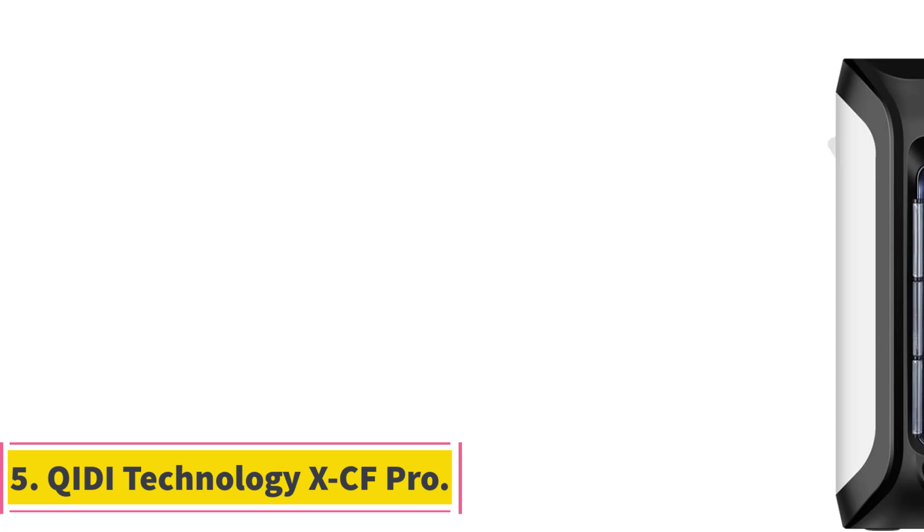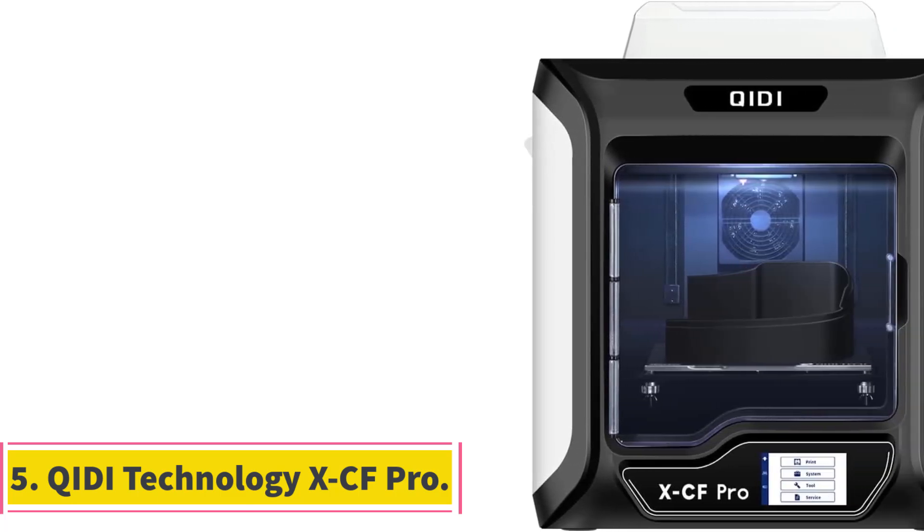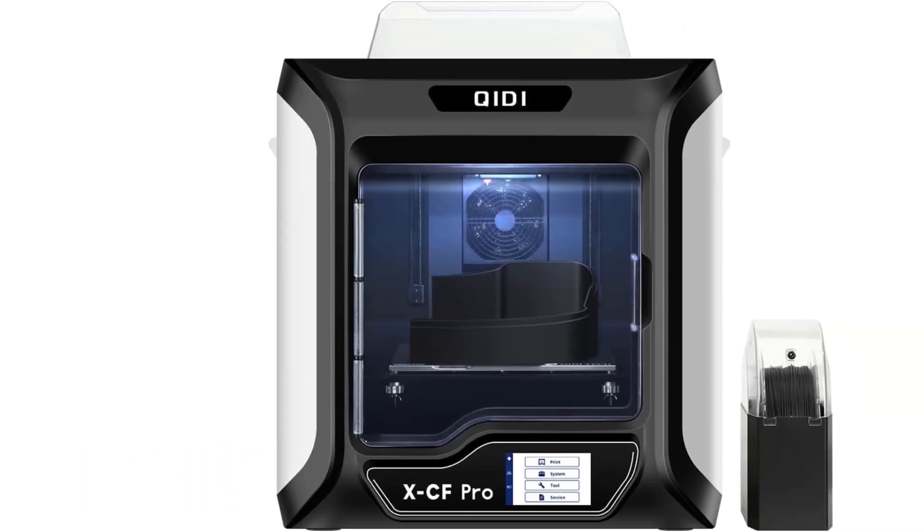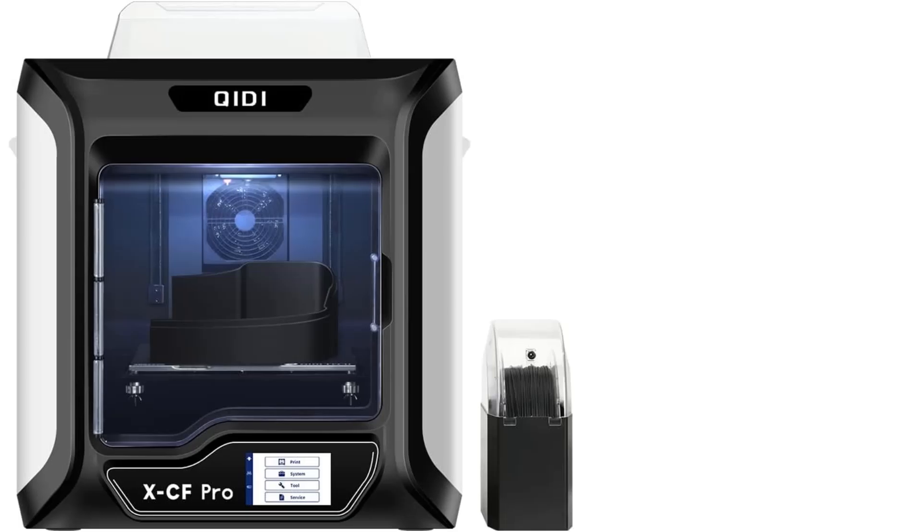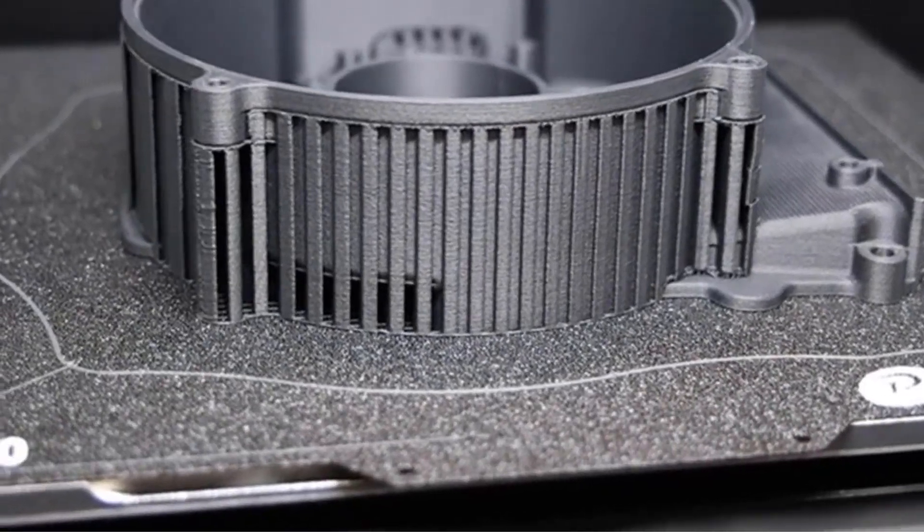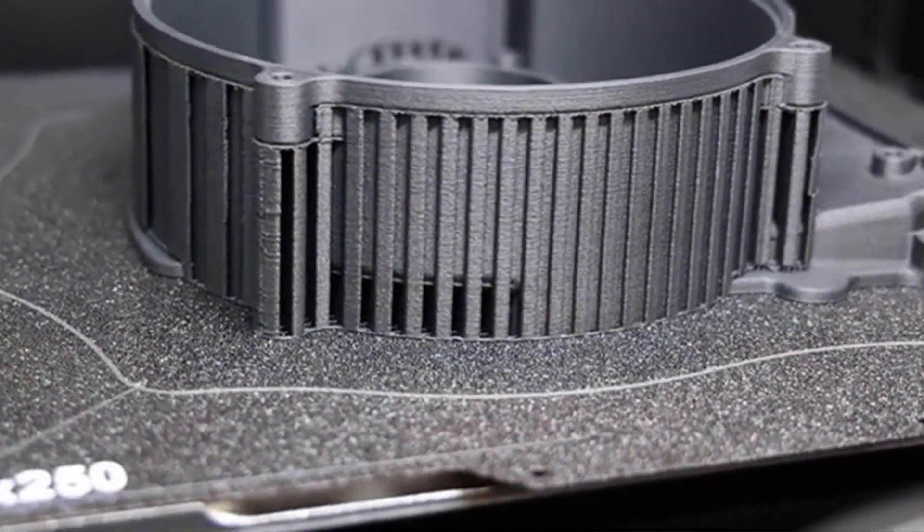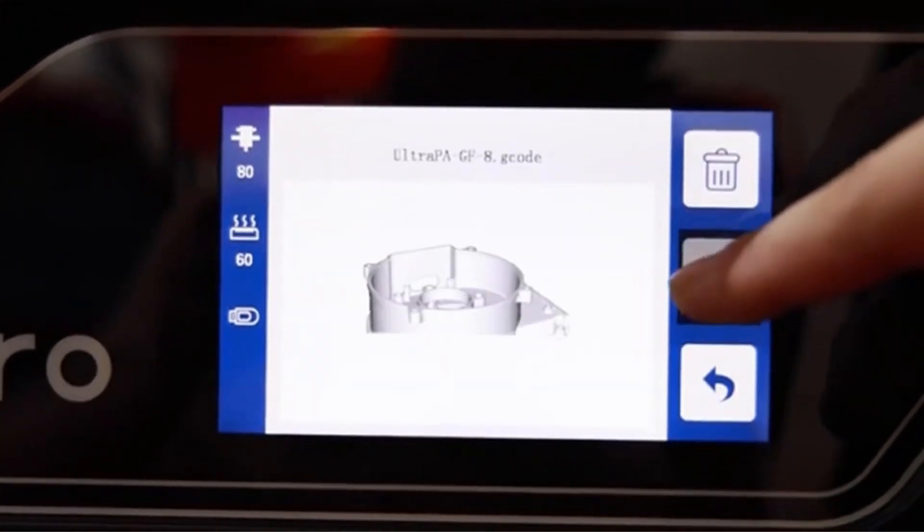Number 5: Qidi Technology XCF Pro. The XCF Pro features carbon fiber compatibility thanks to its high-temperature dual-gear extruder. These extruders can print standard filaments such PLA and ABS, along with exclusive Qidi filaments. To guarantee the printer's accuracy and stability, it is equipped with a dual Z-axis structure and an industrial guide.